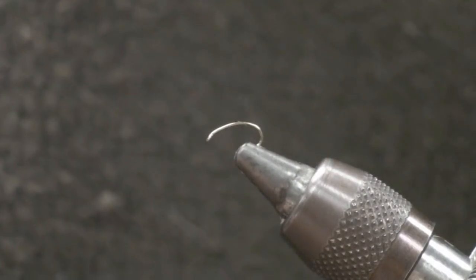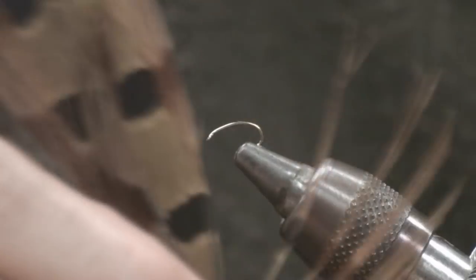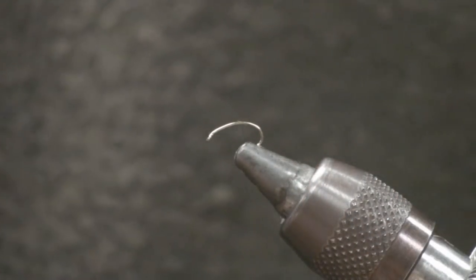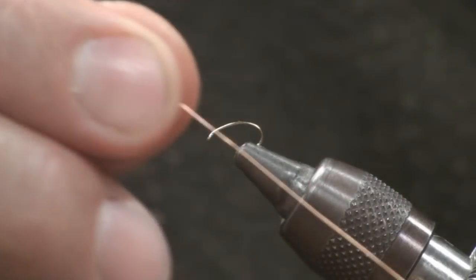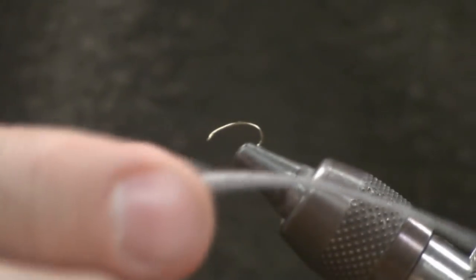Hi my name is Dave from tightlinesflyfishing.com. This afternoon we're going to tie a pheasant tail soft hackle. Materials we're going to use for this fly: pheasant tail, fine copper wire, some gray dubbing, and one dun colored hackle.